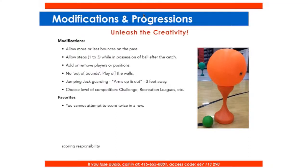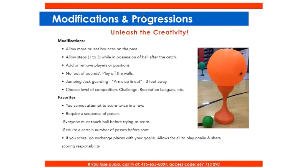Some favorite rule modifications: you cannot attempt to score twice in a row — this really helps share the ball and makes players think about setting up their team. Require a sequence of passes — everyone must touch the ball before trying to score, or require a certain number of passes counted out loud before taking a shot. Another favorite: if you score, you go exchange places with the goalie. This way the same person isn't always at the goalie position, and it allows everyone to be involved and share responsibility.